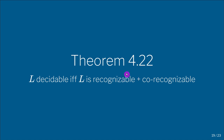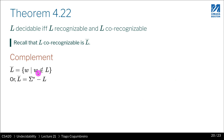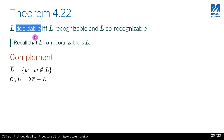So what is decidability, recognizability, and co-recognizability? Decidability I assume you already know. It means that there is a Turing machine that recognizes L and also that Turing machine is a decider — so it always returns either accept or reject. It never loops.